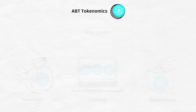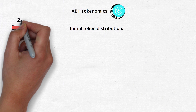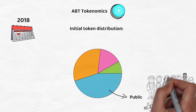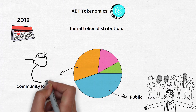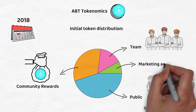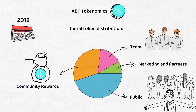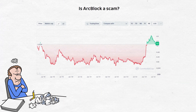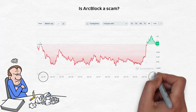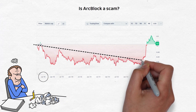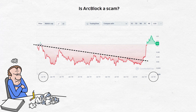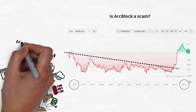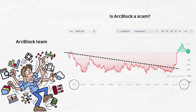The initial token distribution set in 2018 looked as follows: 45% was sold to the public, 32% went towards community rewards, 15% went to the team, and 8% towards marketing and partners. Clearly, no one can accuse ArcBlock of being a rug pull or a quick money-making scam, as the team persisted through six long years of failing value before seeing a revival in 2024. In my opinion, to develop away at a project while its value plummets shows that those involved really believe in this project and are not just here for the quick cash.